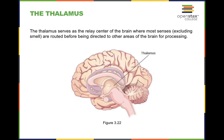We also have what's known as the thalamus, which is ultimately the relay center for the brain. It helps with most senses but excludes smell. That is likely going to be processed up in the parietal lobe. The thalamus is hugely important for relaying information specifically related to your senses.